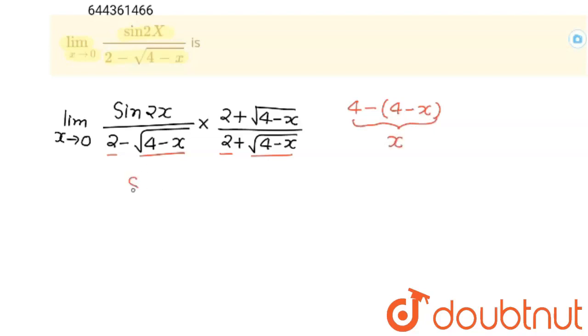So I can write this as sin 2x upon x into 2 plus square root 4 minus x. And this is limit x tends to 0.